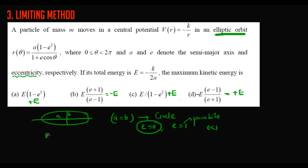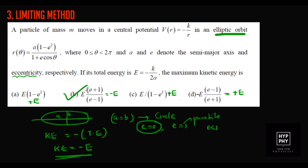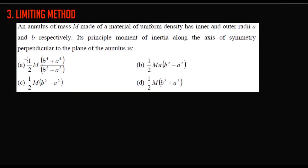For a circular orbit, kinetic energy equals minus the total energy. Since the total energy is E = −K/2a, the maximum kinetic energy equals −E. So Option B is the correct answer. This method is much faster — approximating the elliptical orbit as a circular orbit simplifies the problem greatly.